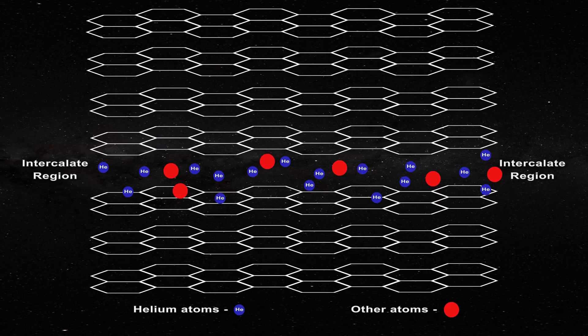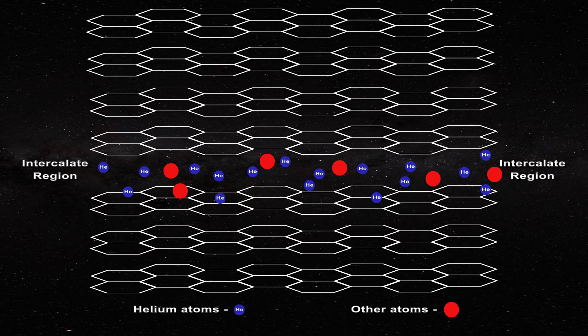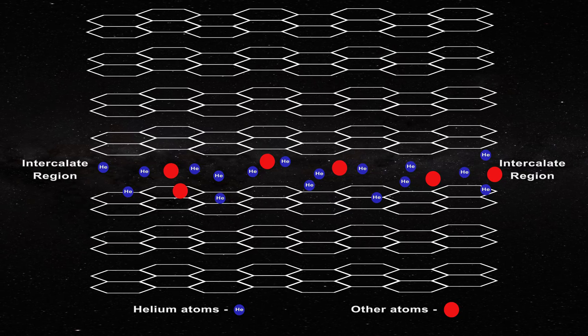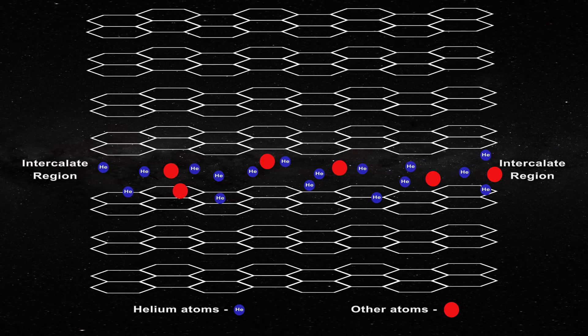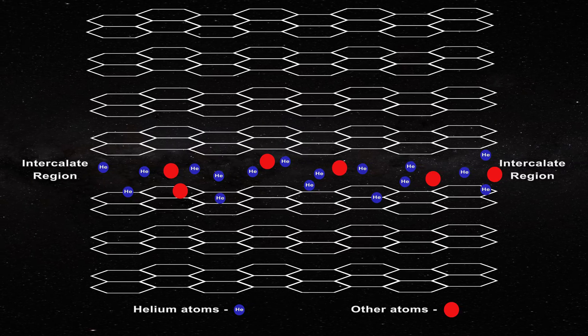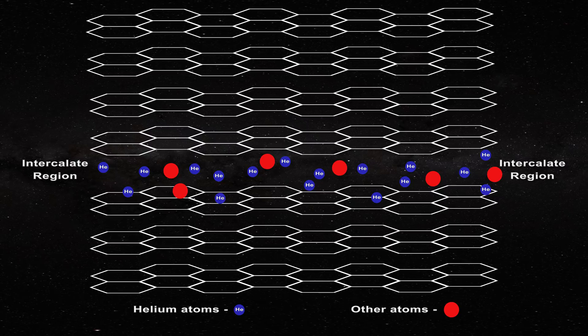Note that whenever a hexagonal structure like graphite is found, it is possible that intercalate regions exist. These regions can occur rather regularly and frequently within the material, or they can be more rare, scattered and infrequent.